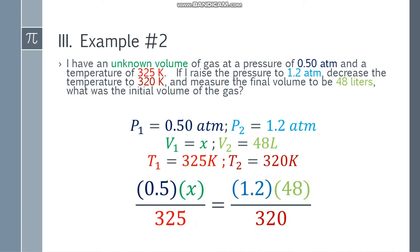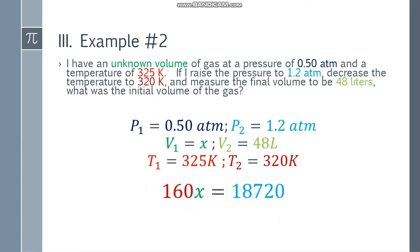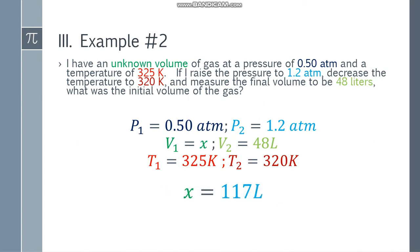Simplify the numerator — that will be 0.5x on the left side and 57.6 on the right side. Cross multiply: you will get 160x on the left side and 18,720 on the right side. To get the value of x, simply divide both sides by 160, and x will be 117 liters.